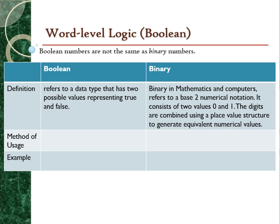These functions combine the binary variables to form a statement. In a Boolean expression, each function has a rule that determines the statement outcome — either true or false — and a symbol that represents it. By definition, Boolean refers to a data type that has two possible values representing true and false, while binary refers to the base-2 numerical notation consisting of two values, either 0 and 1.